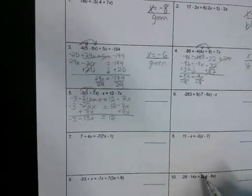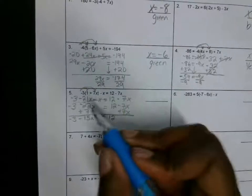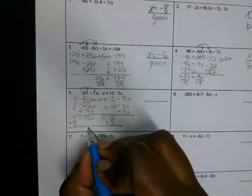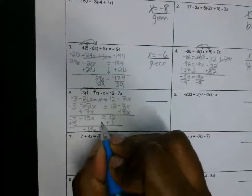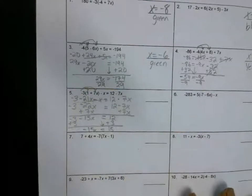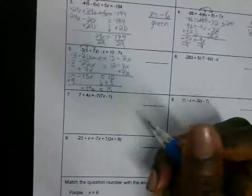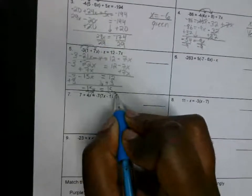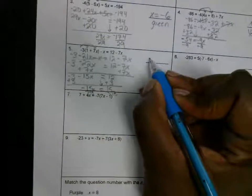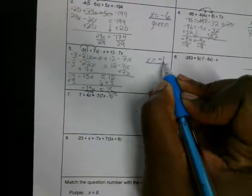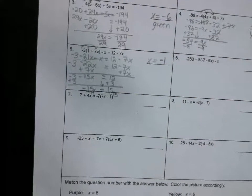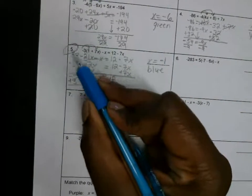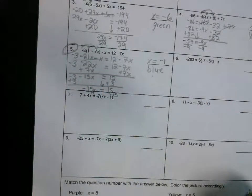Now what are we going to do to get x by itself? Add 3 to both sides. What does that give us — what's left? Negative 15x is equal to 15. Very good. Now what do we do to get x by itself? Divide by negative 15 on both sides. What's 15 divided by negative 15? Negative 1. So x is equal to negative 1. What color is negative 1? It's blue. So everywhere you see 5, you're going to color 5 blue.